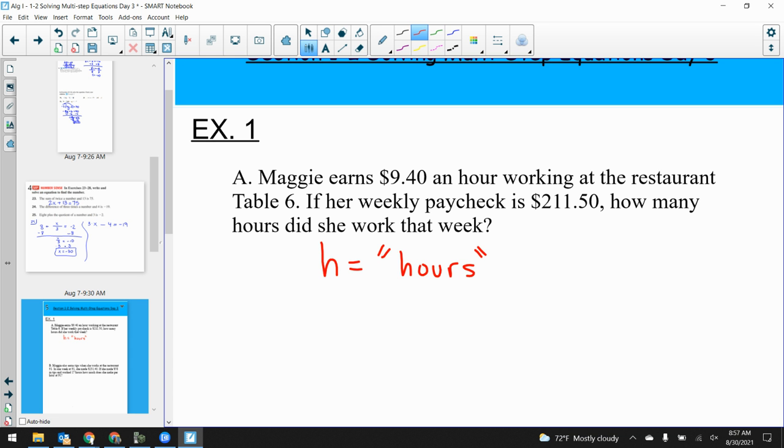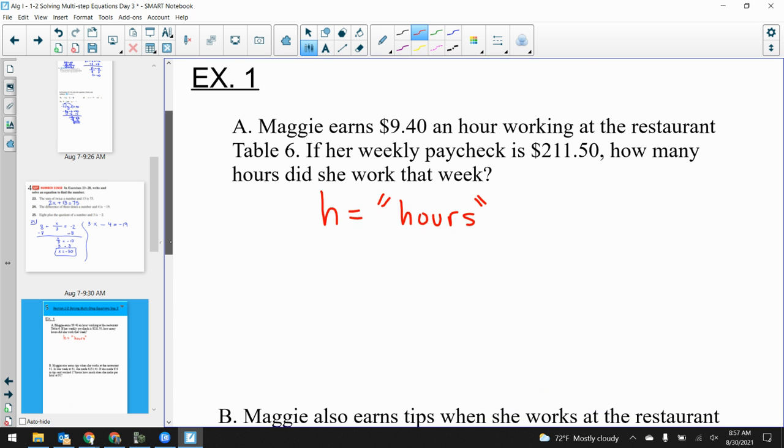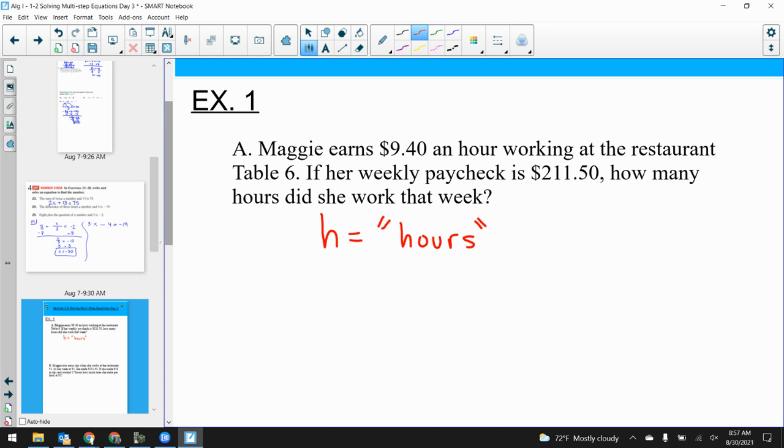How do we create an equation? I want to try to set up an equation. I'll make $9.40 H equals $211.50. That's what I will say. Because in essence, how do we solve this equation? We divide over the 9.4, which is exactly what you were saying.